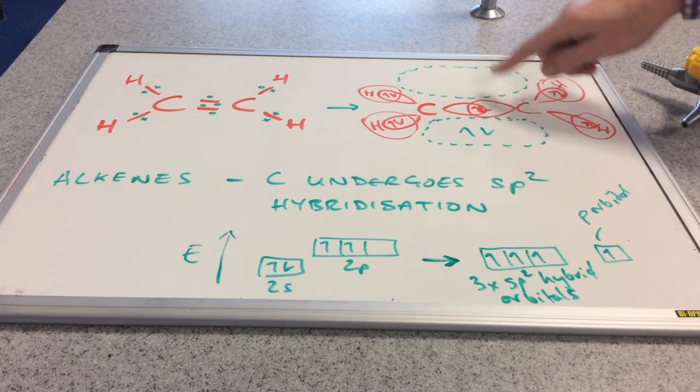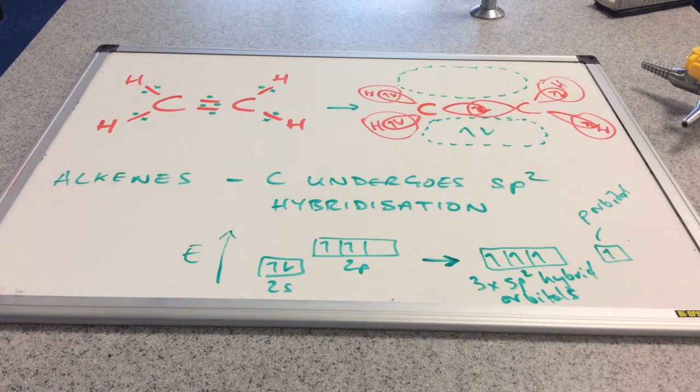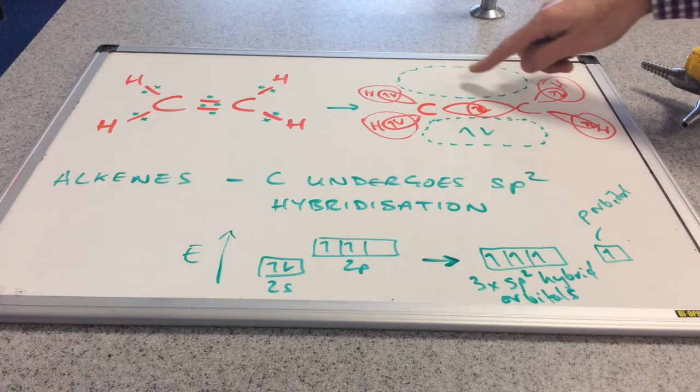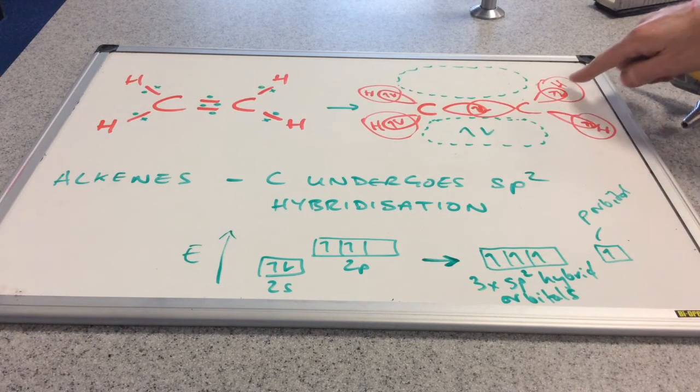This green region of space, these two green regions of space, have actually been formed in a slightly different way. And it was the overlap of the sides, the sideways overlap of the orbitals, not the end-to-end overlap.